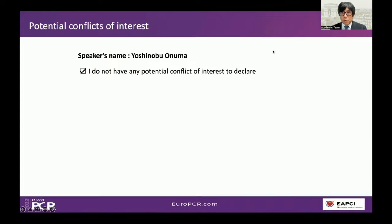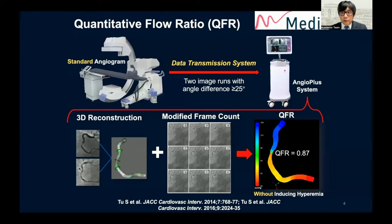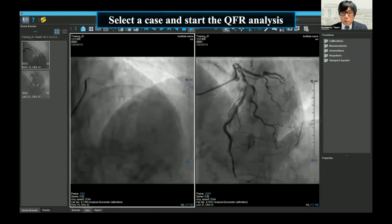We'll now see a second video with Yoshi Onuma — a little bit more technical on the QFR. More and more people are practicing this technology in Europe, and you should not be afraid of it. The quantitative flow ratio is one of the angiography-derived FFR indices, developed by Medis and Amsterdam Medical Center. As with standard FFR, the cut-off value to indicate revascularization is equal to or less than 0.8. QFR is based on two angiographic projections separated by at least 25 degrees. By combining these projections with frame count, the software calculates the QFR value, which is equivalent to FFR.